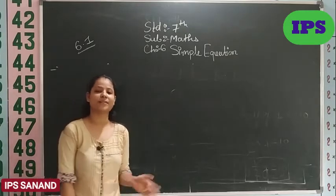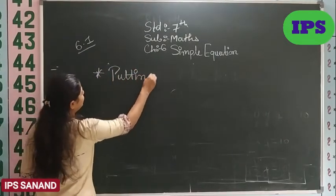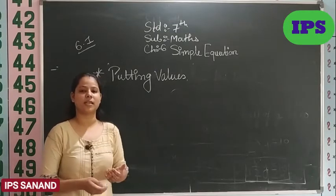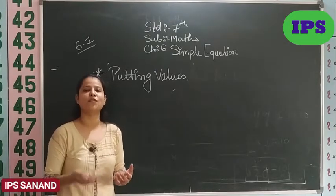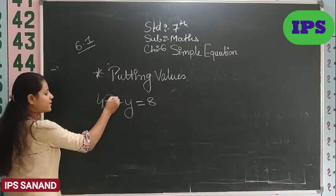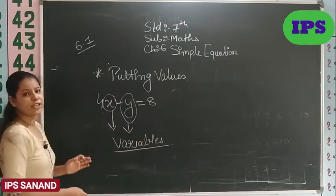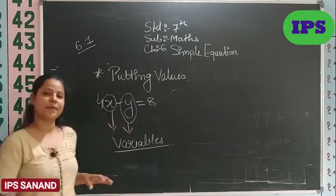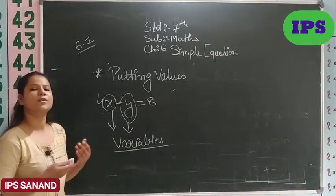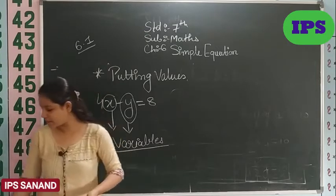For this particular exercise, you can refer to exercise 6.1. Now, our next topic is putting values. By now in this chapter you should know that x, y, all these things, these alphabets, what are they. So, 4x minus y equals to 8. This x and this y are called variables. Variables' values are not constant. As we learned in 6th standard, variables' values are not constant. We have to find the values of variables.